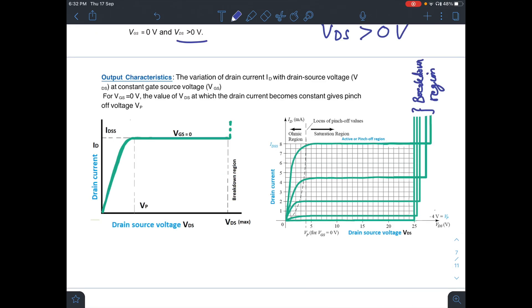To draw the output characteristics, we have first taken VGS equal to 0. Once you increase VDS, current will flow and it will obey Ohm's law. Therefore, current will increase with the voltage. This region is your ohmic region.